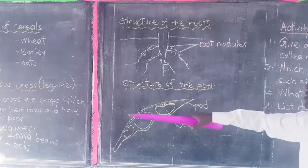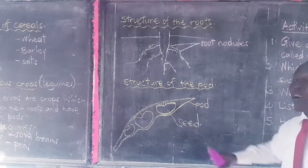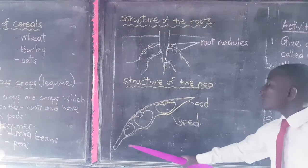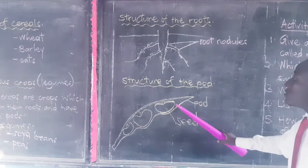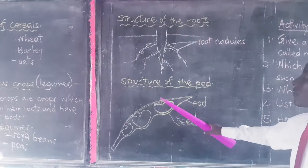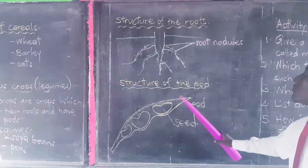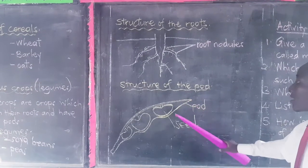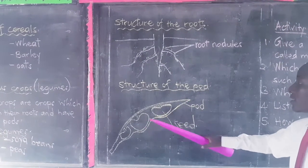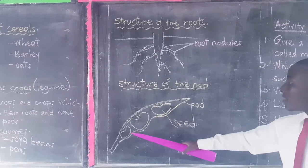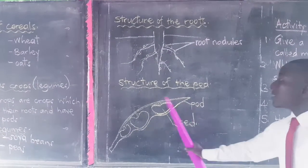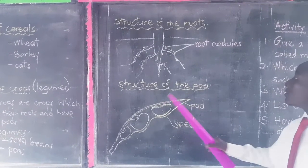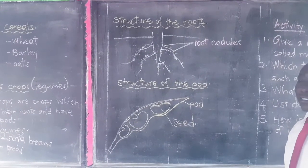They also have their seeds in pods. This is the structure of the pod — you can see this. For example, this one is of the beans. The seeds are inside the pod. This one is the pod and those are the seeds.